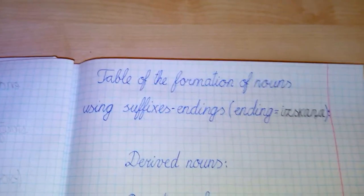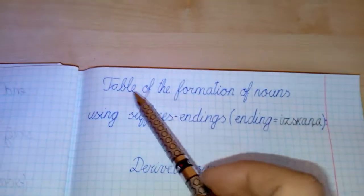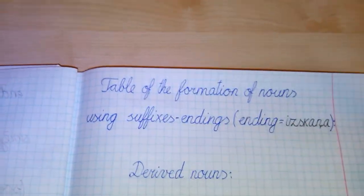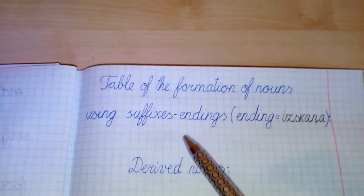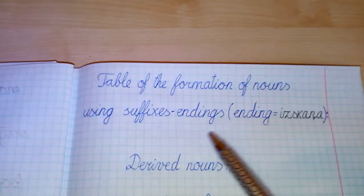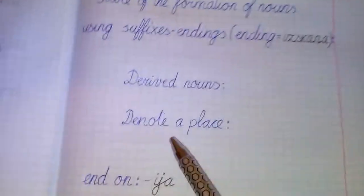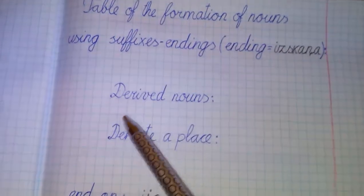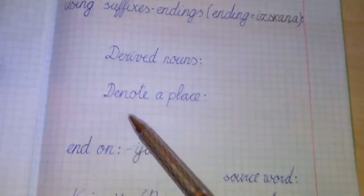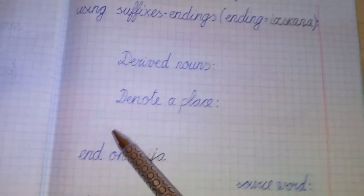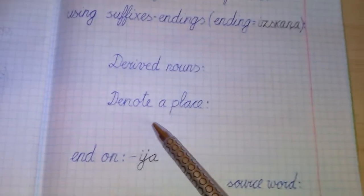Hello dear friends! Let's learn Latvian language. Today is a continuation of the table of noun formation using suffixes with endings. Ending in Latvian is iskanya, and these are derived nouns. In this lesson, the nouns denote a place.